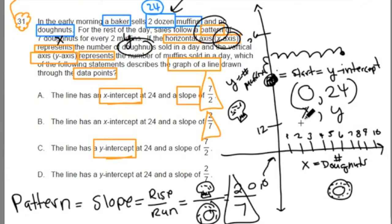Well, our doughnuts here, they increase by seven. So they sell seven doughnuts, and for every seven doughnuts, they sell two muffins. So we would add the two to the 24, and we'd get 26.